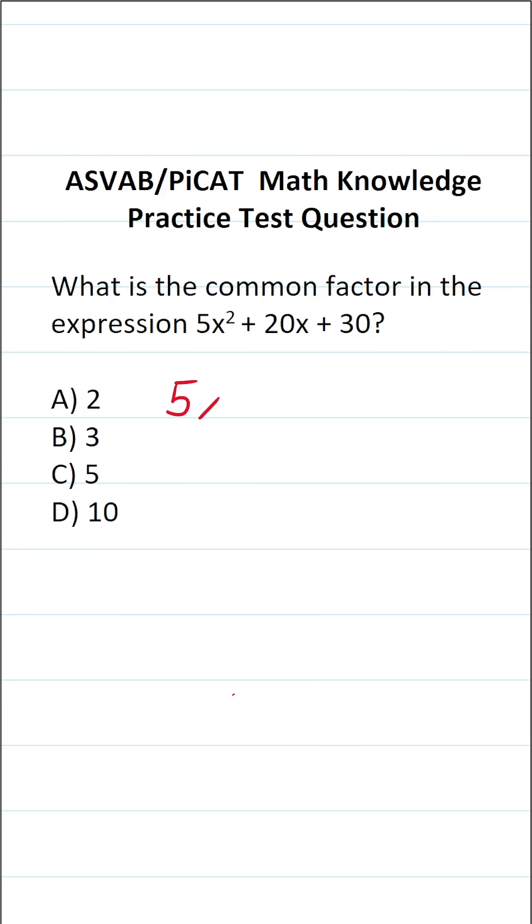So we're given the expression 5x squared plus 20x plus 30, and we want to find its biggest common factor.